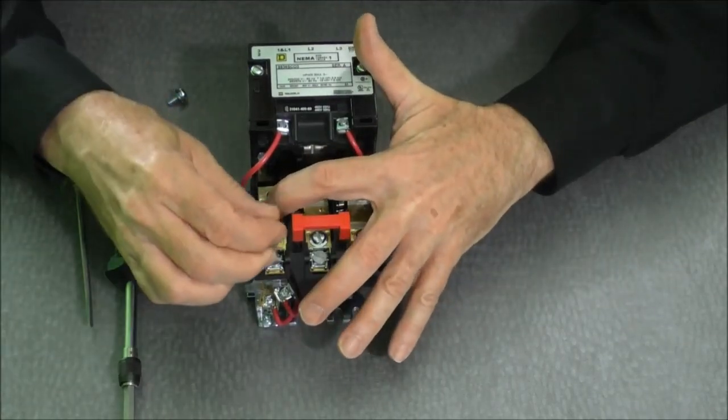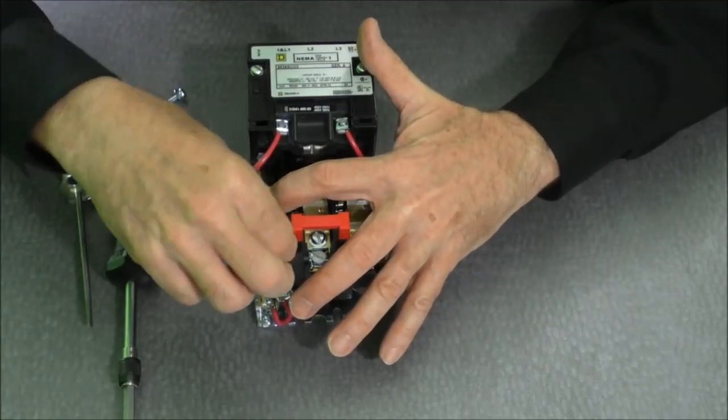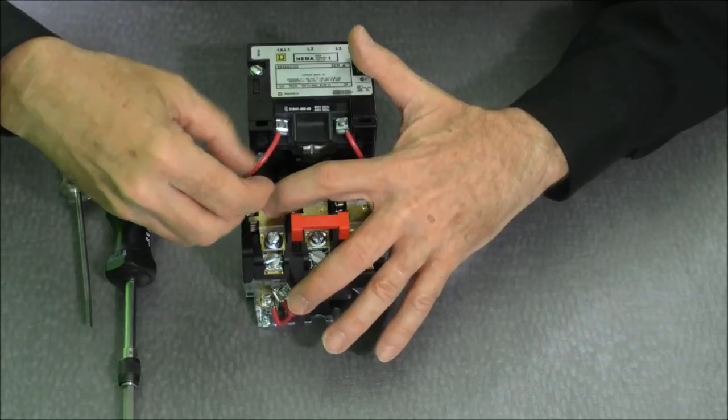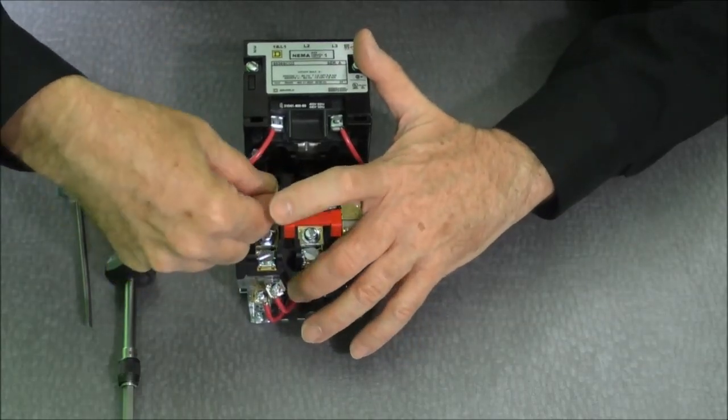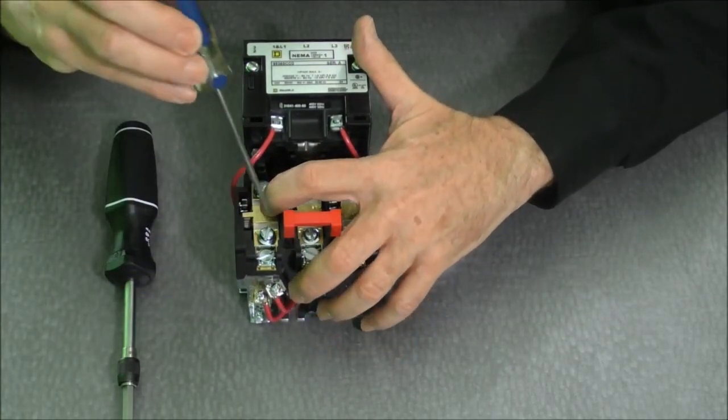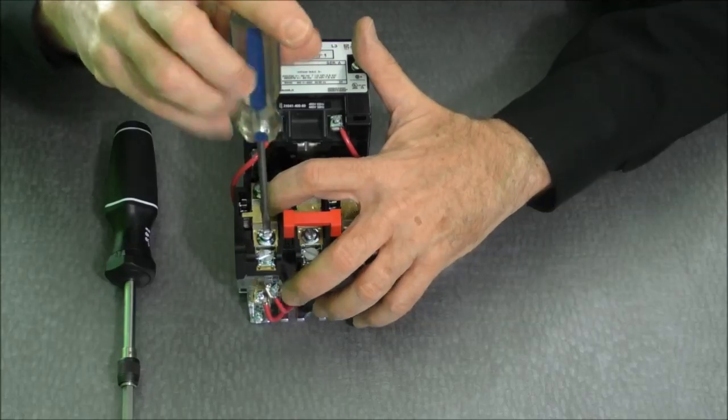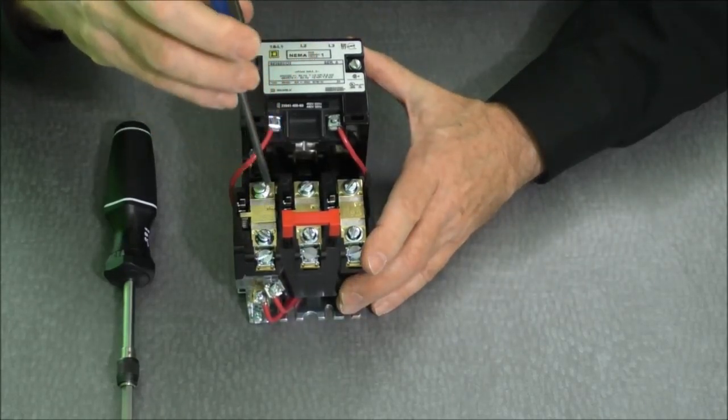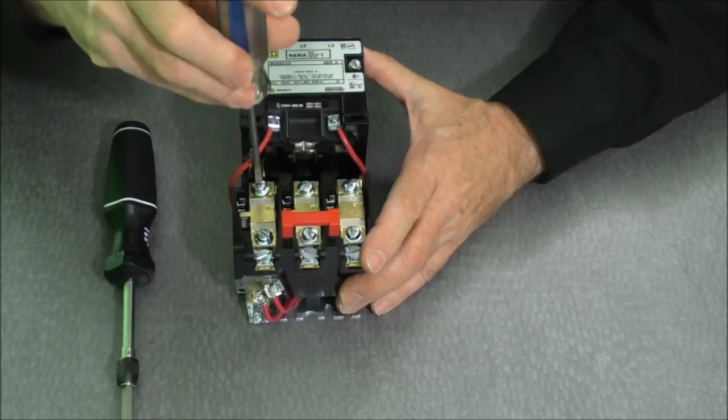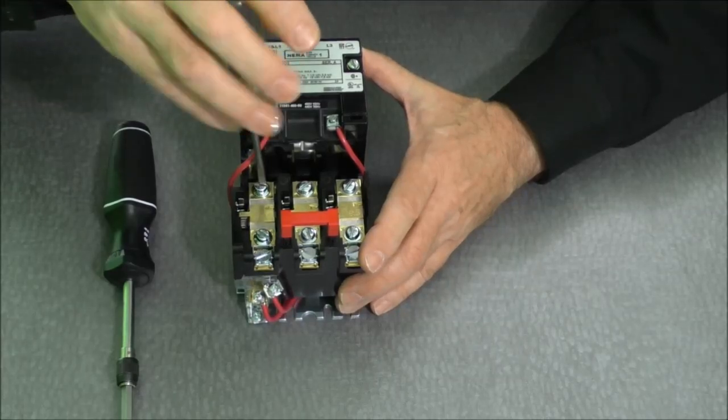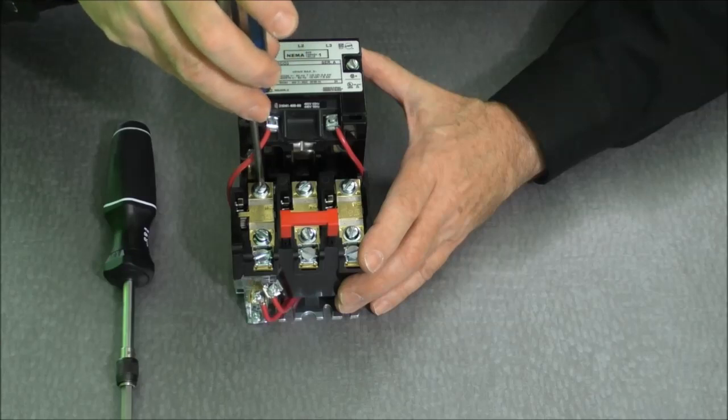Once it's in the cavity, we can take the screws and fasten them. Because it's a little cumbersome to use a torque screwdriver, I'm going to use a regular screwdriver to just torque them up a little bit, and then I'll use the torque screwdriver to get it to the appropriate settings.